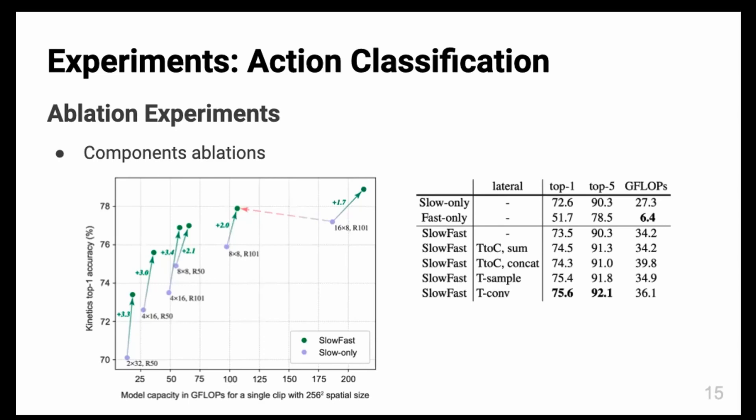For the right figure, they also did ablation studies for the components. They tested the slow only and fast only—they tested the pathway individually—and also with different methods of the lateral connections. They determined that using the t-convolution lateral connections achieves the best performance.